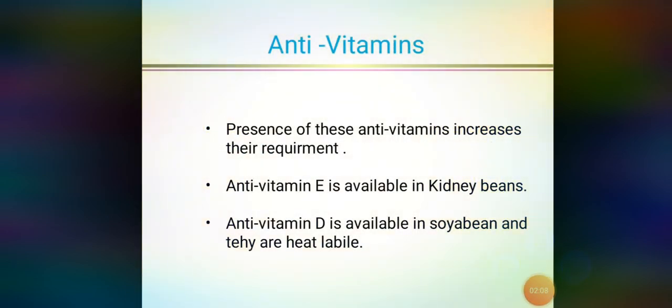The next anti-nutritional factor is anti-vitamins. The presence of these anti-vitamins increases their requirement. For example, anti-vitamin E is available in kidney beans, while anti-vitamin D is available in soybeans. They are heat labile, meaning by providing heat we can easily remove these anti-vitamins. Some examples are mentioned, and the method for removal — heat treatment — is also noted.